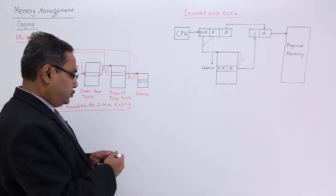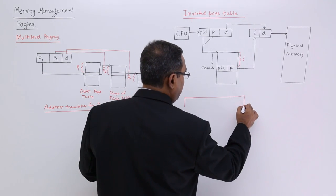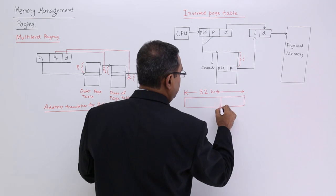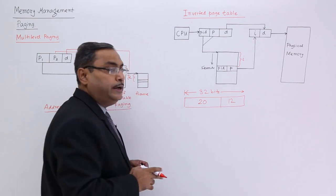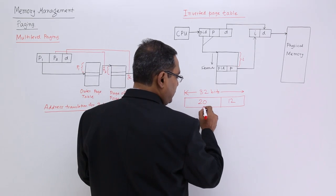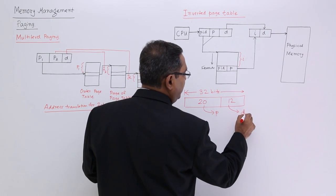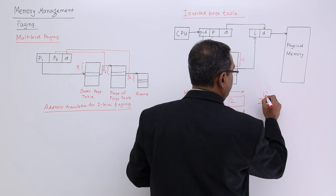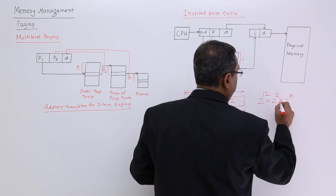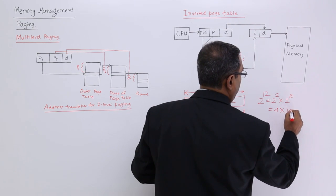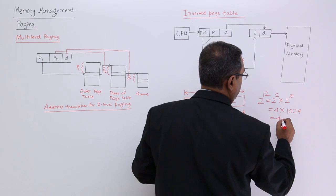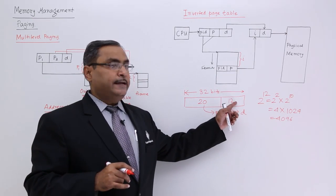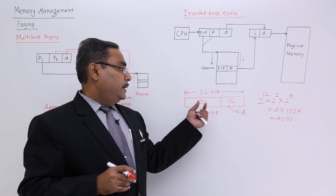Let me draw the diagram. We have one memory address of 32 bits, divided into 20 and 12. So 20 is denoting the page number and 12 is denoting the page offset. As 12 is the page offset, the page size will be 2 to the power of 12, which equals 4 into 1024, that is 4096. So each and every page will have a size of 4096, that means 4K, and a 20-bit page number.